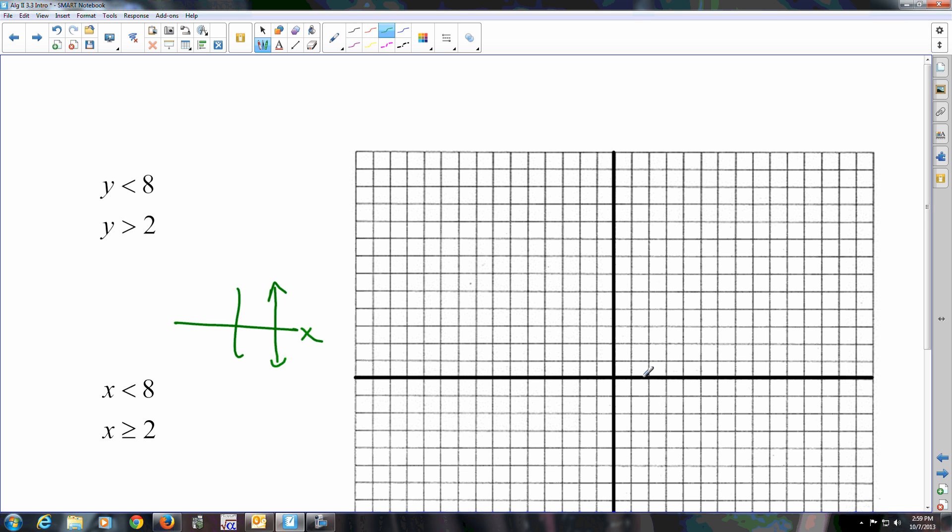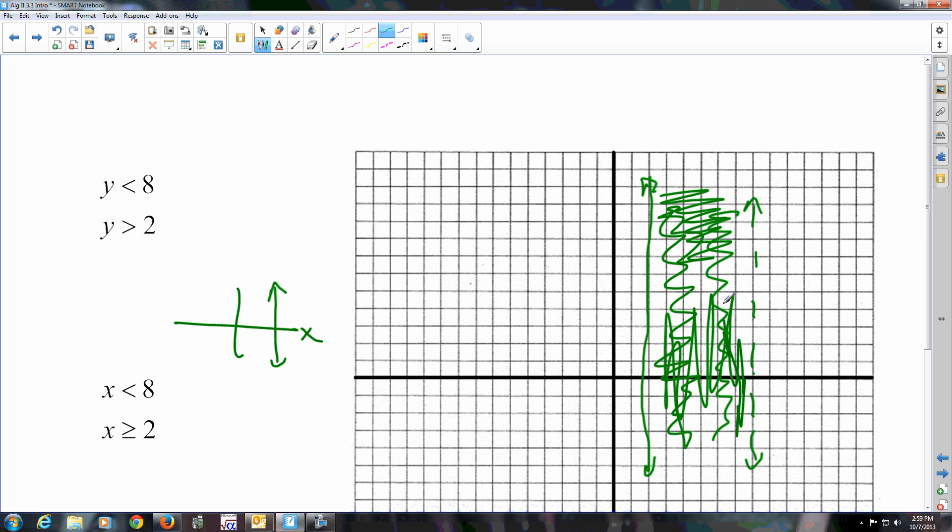X is less than 8. It doesn't have an equal sign with it, so it's a vertical line that's dashed. X is less than 8, it's going to be shaded this side. Then you have another vertical line. X is greater than or equal to 2. It does have an equal sign with it, so the line is solid. And x is greater than, so we're shading to the right. So the area that's going to be overlapped is between the two lines. So this is this section of the graph that would get shaded. It's in between them.